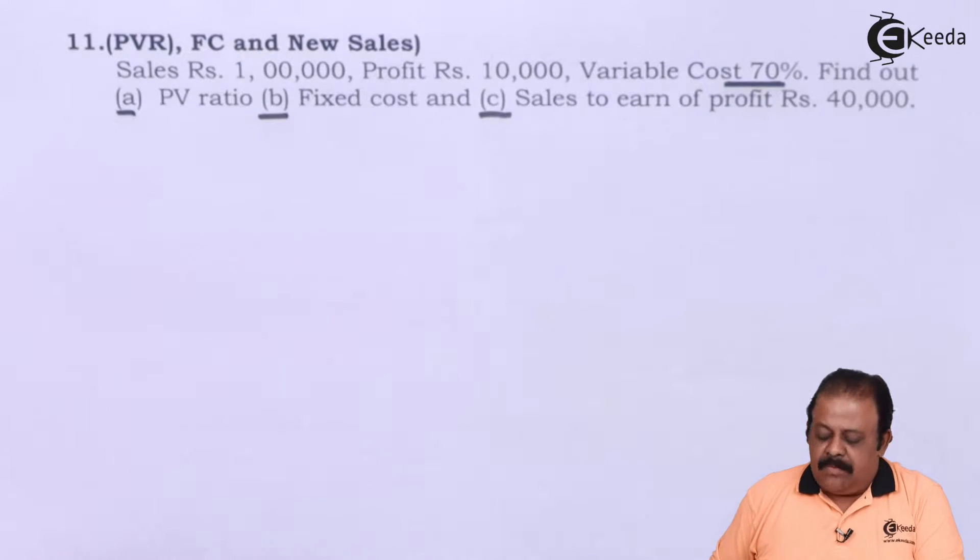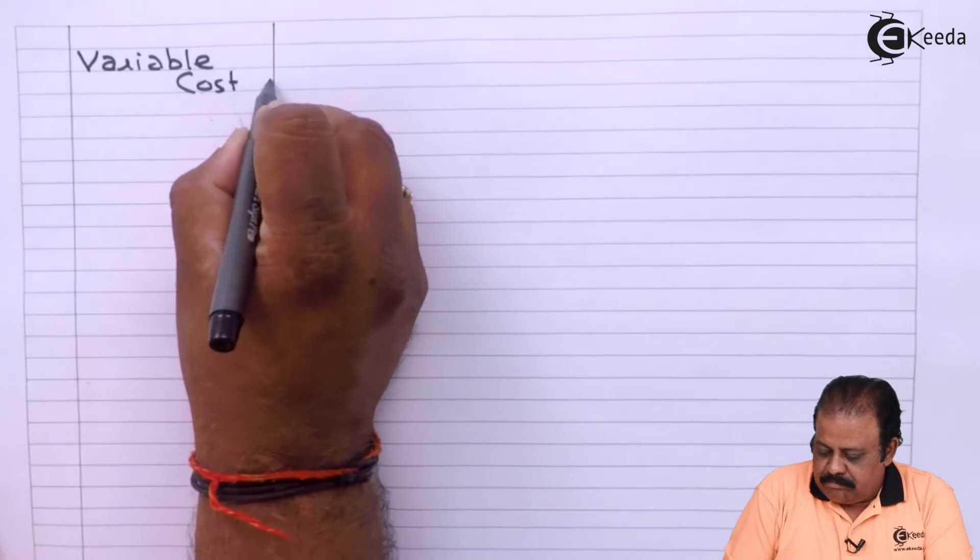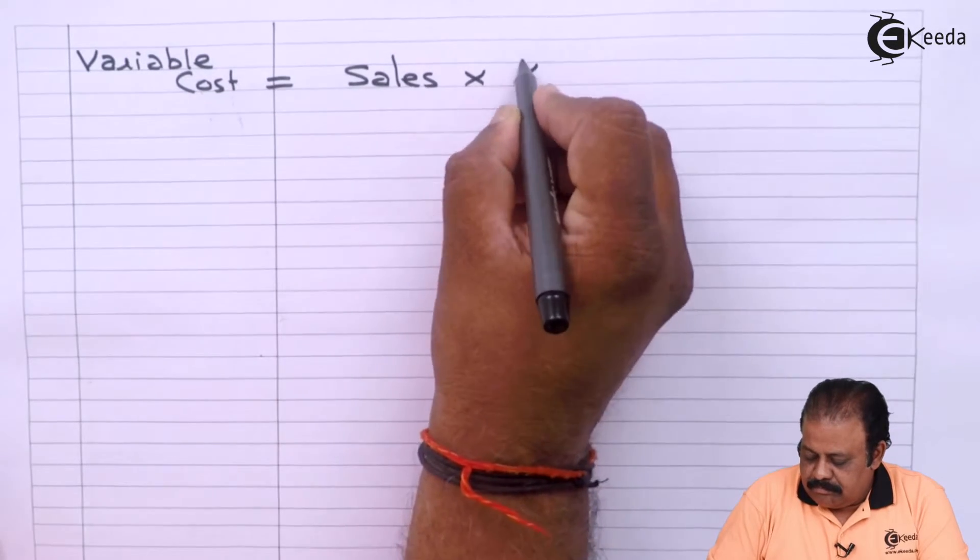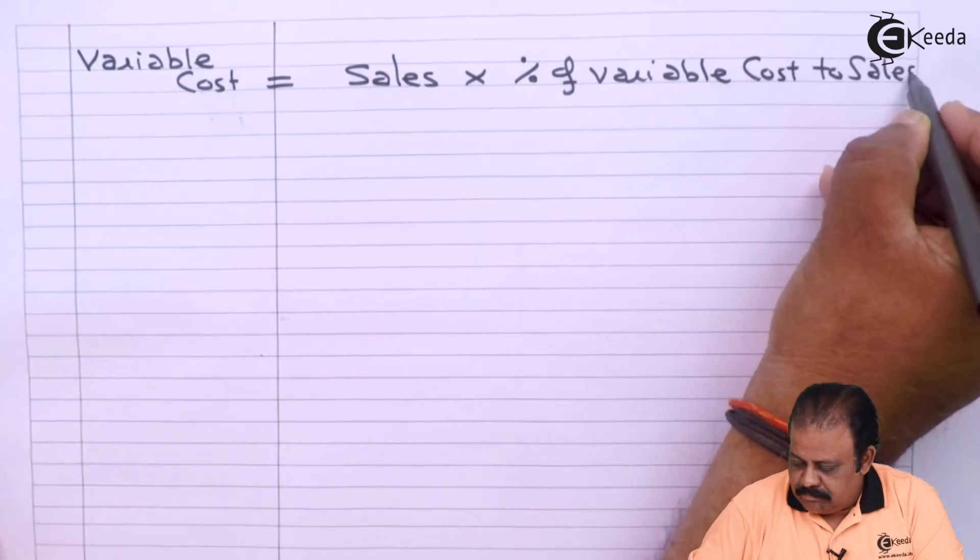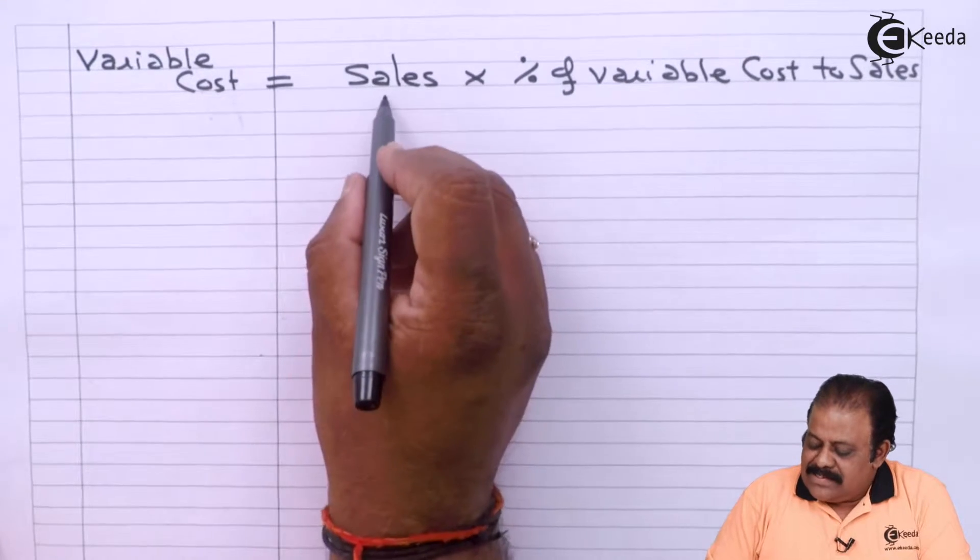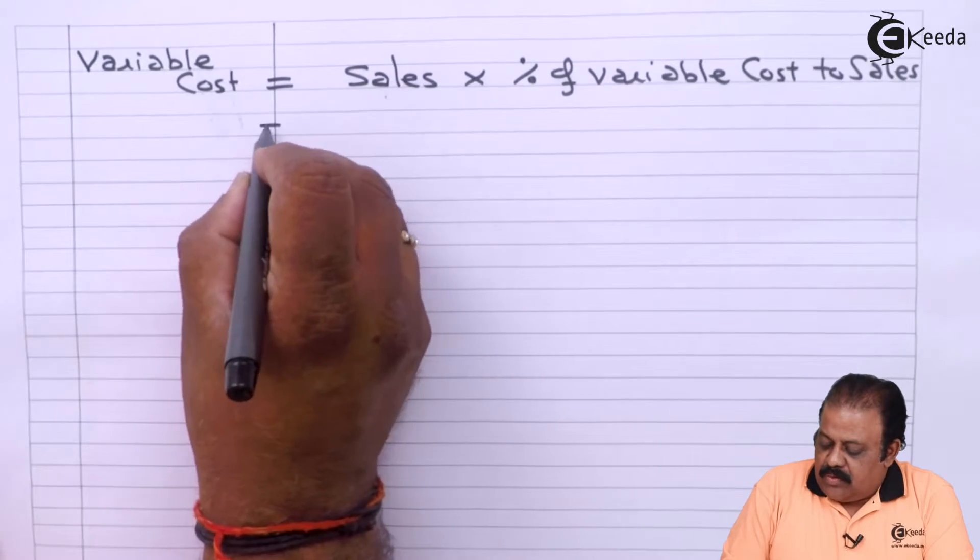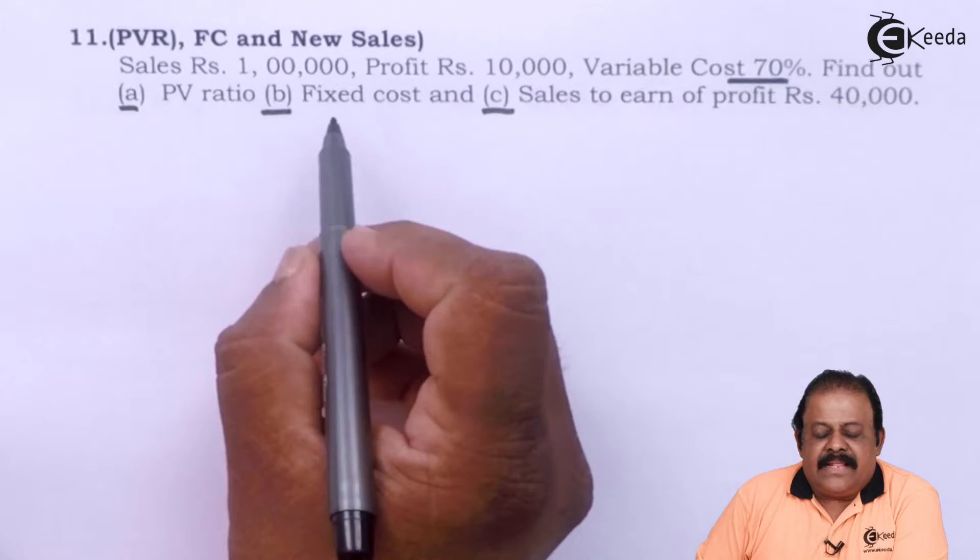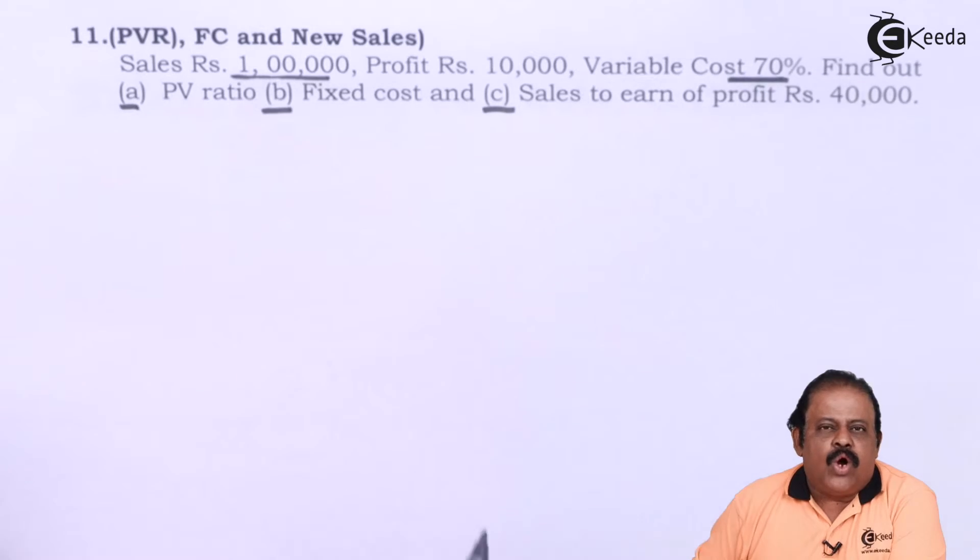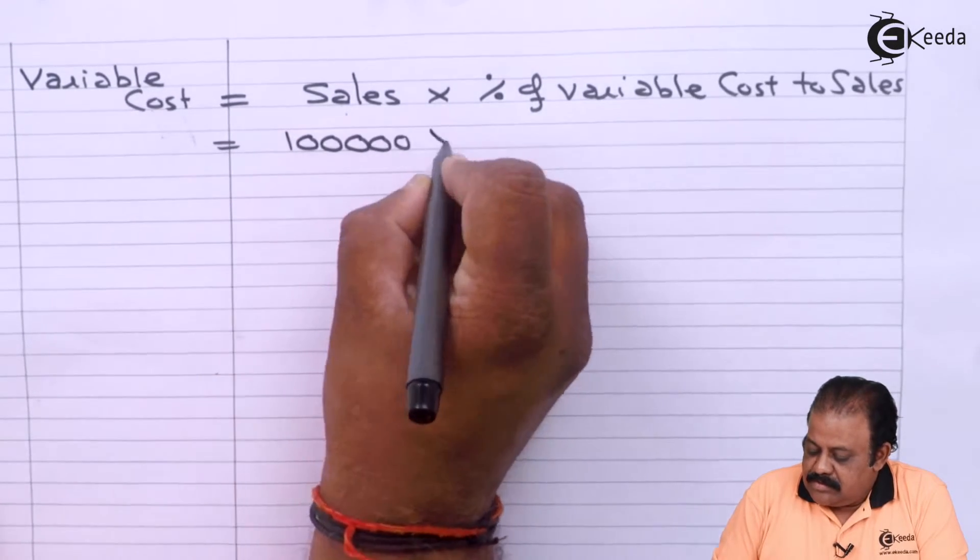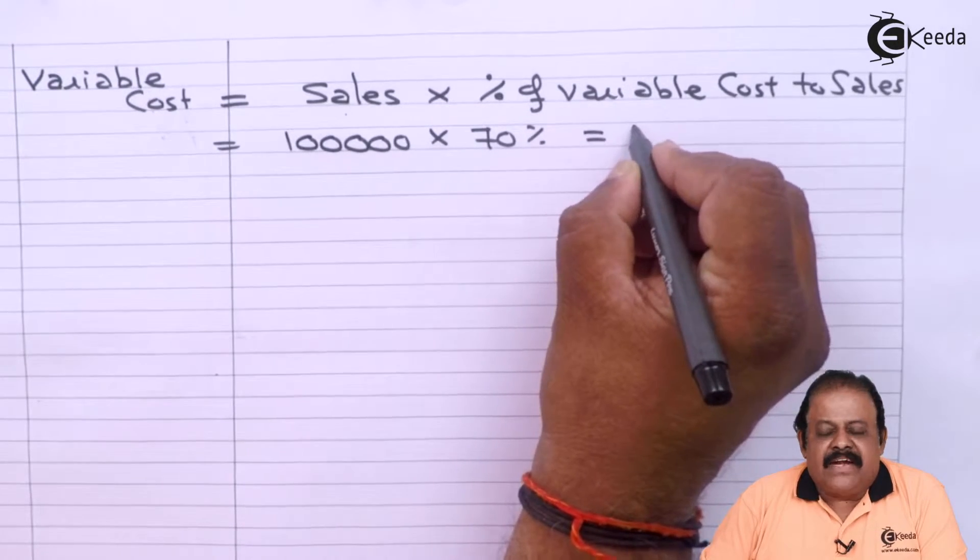Variable cost is equal to sales multiplied by percentage of variable cost to sales. Here we have sales 1 lakh and variable cost 70% of sales, so it will be 70,000.